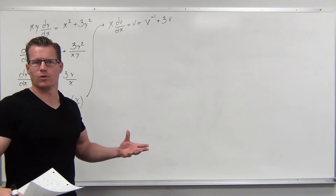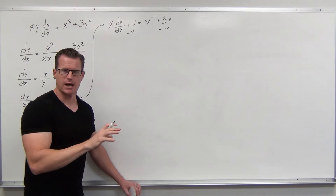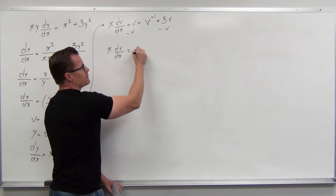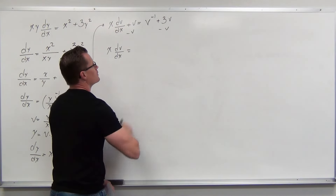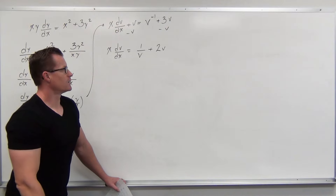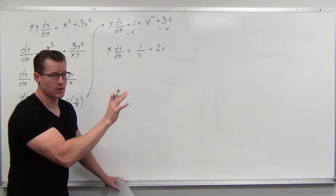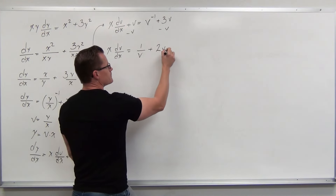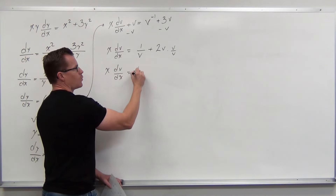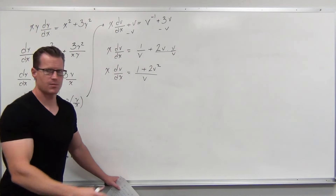Letting v = y/x, solving for y = vx, and taking the derivative gives dy/dx = x(dv/dx) + v. Substituting on the left we get x(dv/dx) + v, and on the right v^(−1) + 3v, which simplifies to 1/v + 2v after subtracting v. We need one fraction to separate variables: getting a common denominator of v gives (1 + 2v²)/v. So x(dv/dx) = (1 + 2v²)/v.